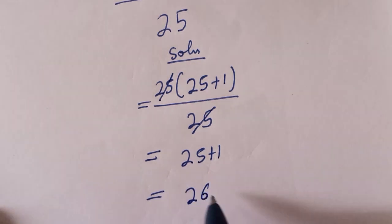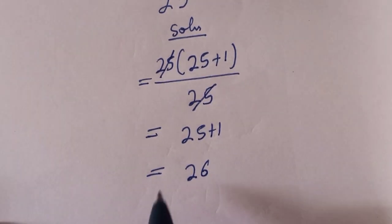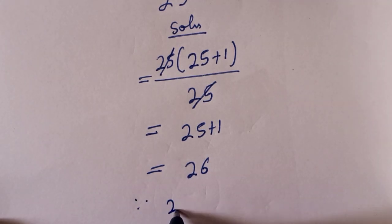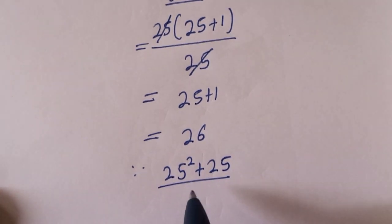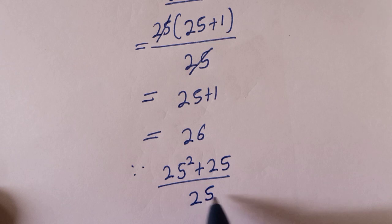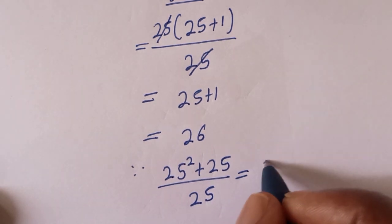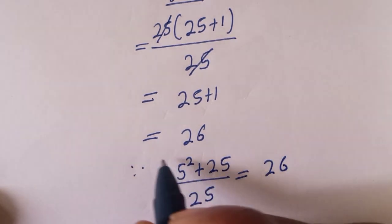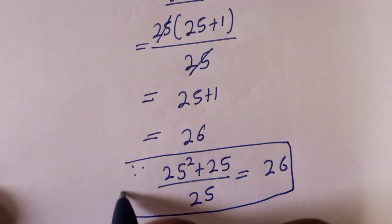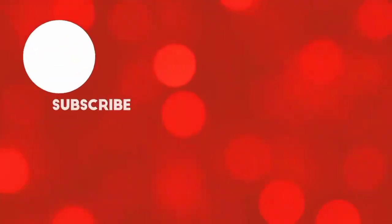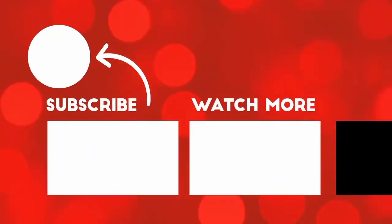26. Therefore, 25 squared plus 25 over 25 is equal to 26, and that is our final answer. Before you leave, like, share, comment, and subscribe. Thank you, bye bye.